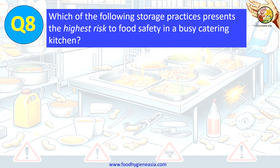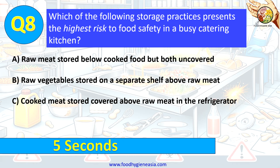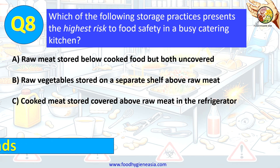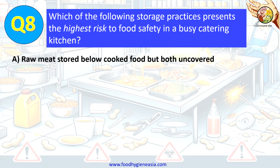Question 8. Which of the following storage practices presents the highest risk to food safety in a busy catering kitchen? A. Raw meat stored below cooked food but both uncovered. B. Raw vegetables stored on a separate shelf above raw meat. C. Cooked meat stored covered above raw meat in the refrigerator. The correct answer is A. Raw meat stored below cooked food but both uncovered.